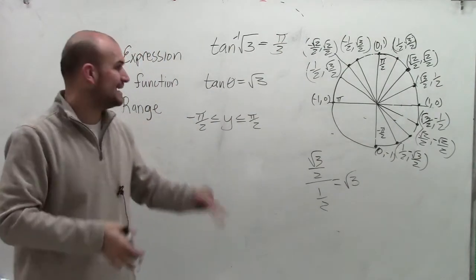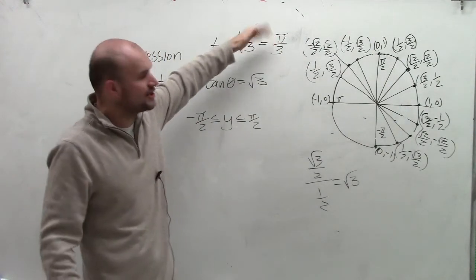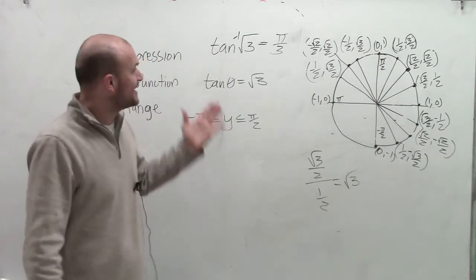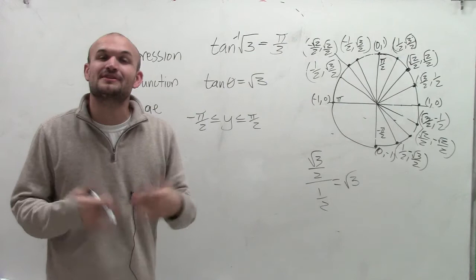To say that differently, tan(π/3) = √3. There you go, ladies and gentlemen. That's how you evaluate the inverse tangent function. Thanks.